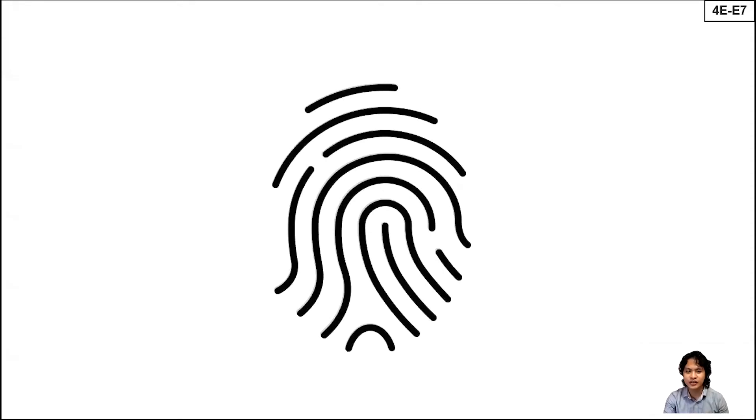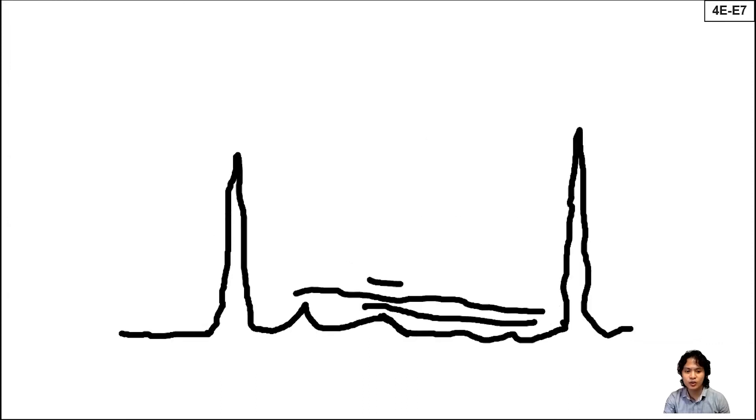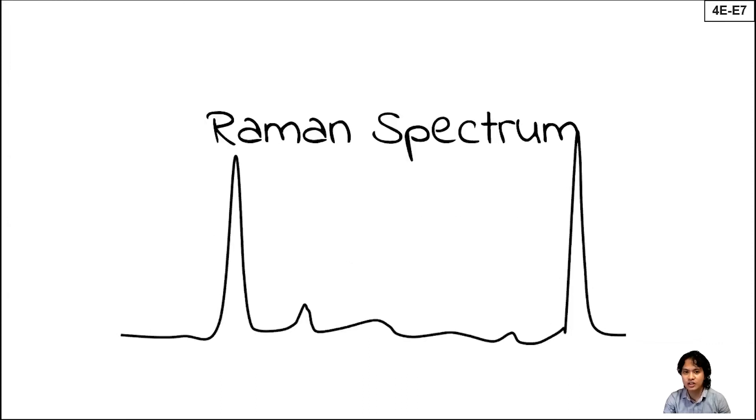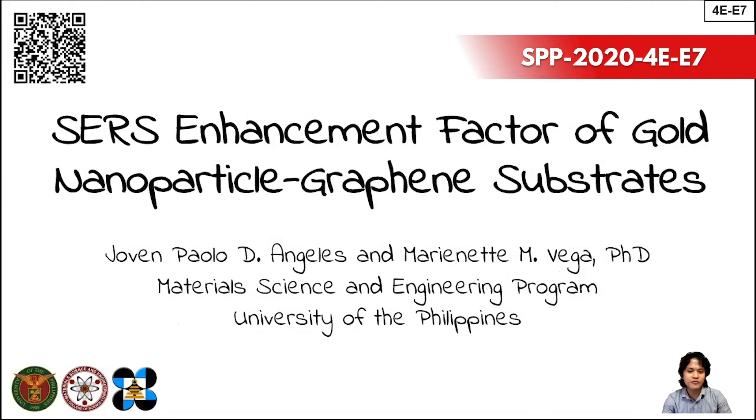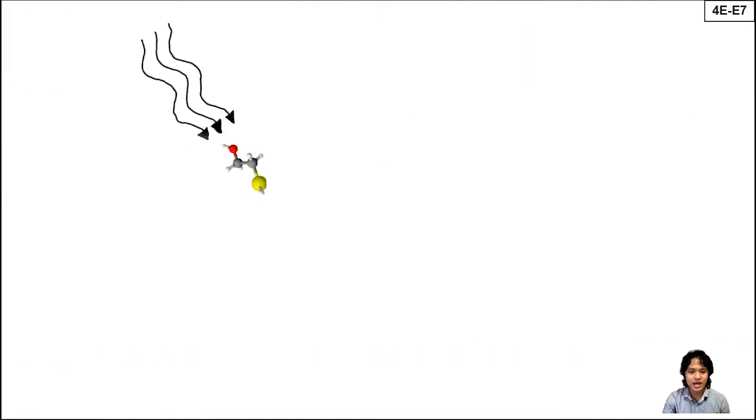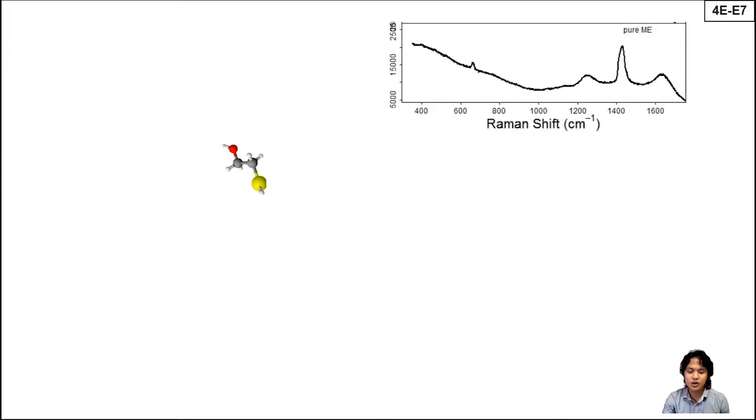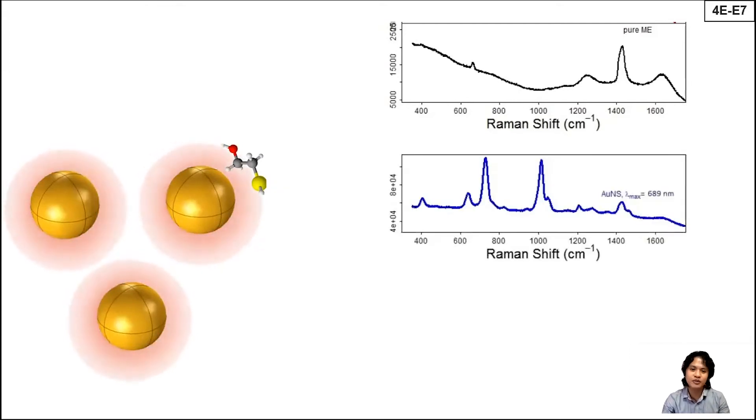What would you do if you wanted to recognize and confirm his or her identity? You look for their fingerprints. The clearer the fingerprint, the better. For molecules, you detect its so-called Raman spectrum. What if the signal is weak and you wanted to detect, for example, a pollutant or a certain virus? Thankfully, we have a technique called surface-enhanced Raman scattering or SERS. Hello everyone, I am Joven Angles and here is our research entitled SERS enhancement factor of gold nanoparticle graphene substrates. We enhance the recognition capabilities by enhancing the Raman signal or its fingerprint. Gold nanoparticles enhance the signal on its surface when excited by a laser.